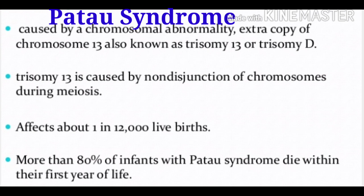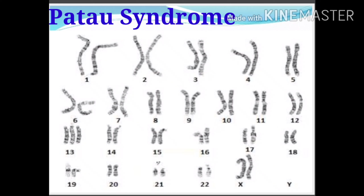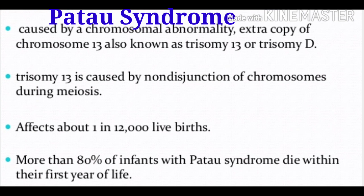Trisomy means when an extra chromosome is added — that is, 2n+1. Trisomy 13 is caused by non-disjunction of chromosomes during meiosis. Non-disjunction means failure of separation of chromosomes during cell division. It affects about 1 in 12,000 births and is a rather rare disease. More than 80% of infants with Patau syndrome die within their first year of life.